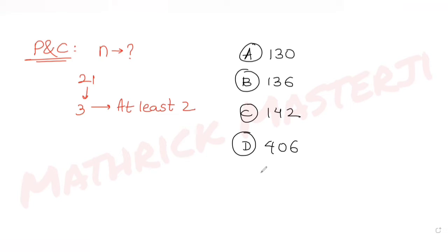Before starting the solution, we need the idea of stars and bars, which is a classic case of combinations. Stars and bars is used when we are distributing identical items into distinct groups with certain restrictions.